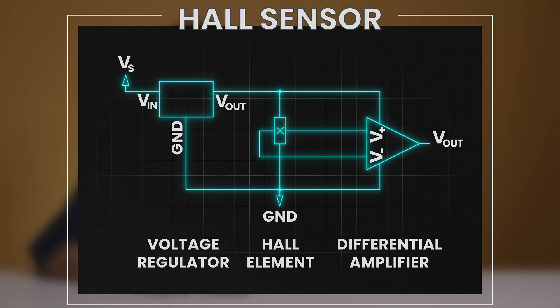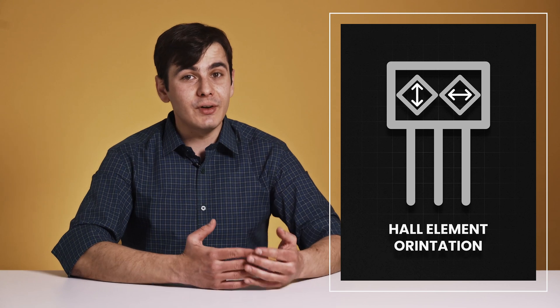The Hall sensor is some sort of semiconducting material. Actually, there are two Hall elements that are positioned very close to each other. One of them reacts to the excitation on the vertical axis and the other one to the horizontal axis.